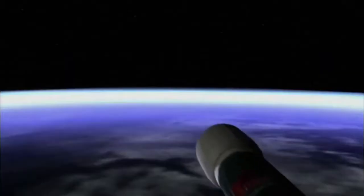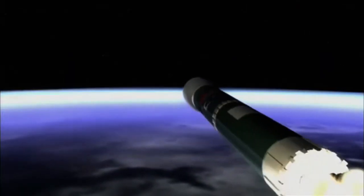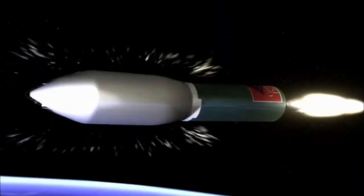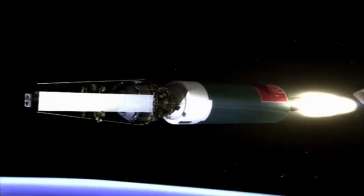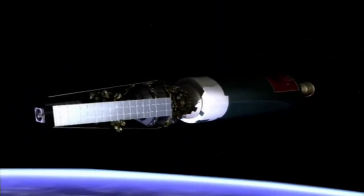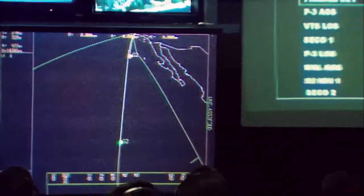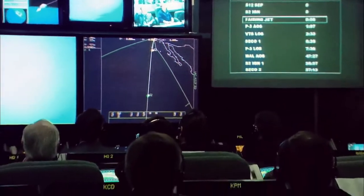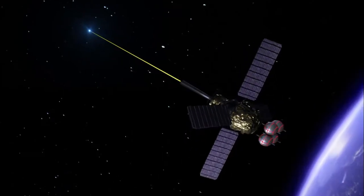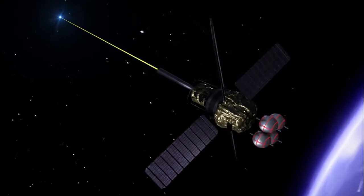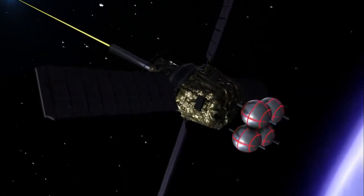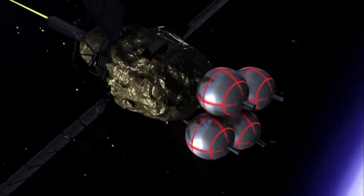For over a year, Gravity Probe B orbited the Earth while the team nervously monitored its every move, trying to see if the Earth would actually twist space. Finally, the data began to trickle in. And there was a problem. The gyroscopes were experiencing a tiny, unexpected wobble. And to clean up the data would cost millions.